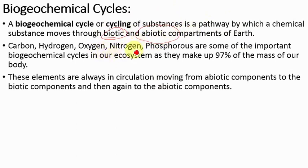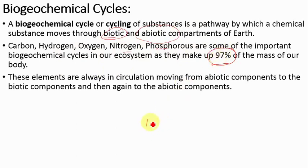There are many biogeochemical cycles, but the important ones involve carbon, hydrogen, oxygen, nitrogen, and phosphorus. Why are these so important? Because all these minerals constitute as much as 97% of our body mass. If we consider a body of 100 kg, then 97 kg of that weight is constituted by these minerals. So this is why we study their cycles.